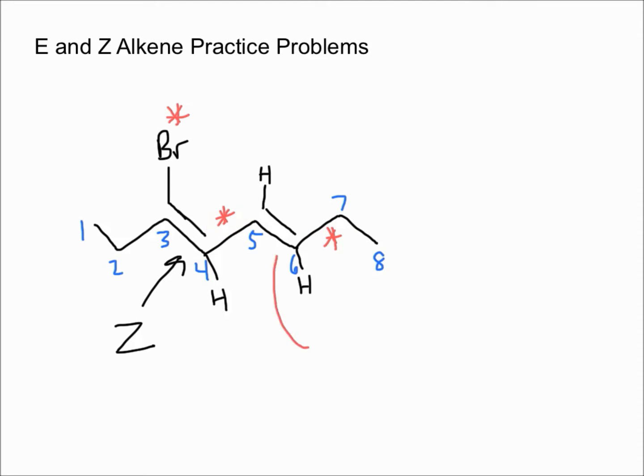If that's the case, then the highest priority groups are on opposite sides, so this gets an E designation. To name this, the final name would be (3Z,5E)-3-bromoocta-3,5-diene.